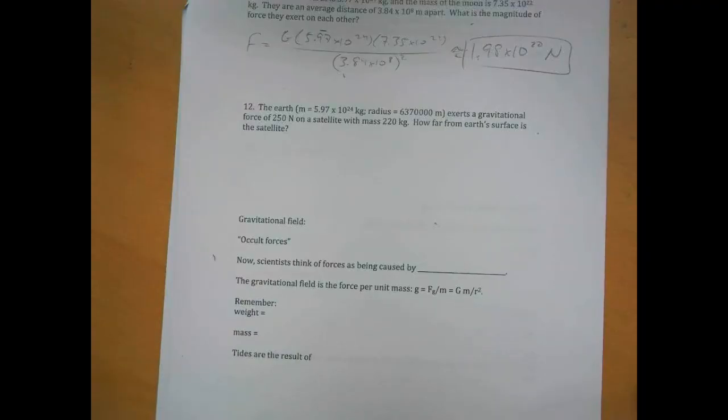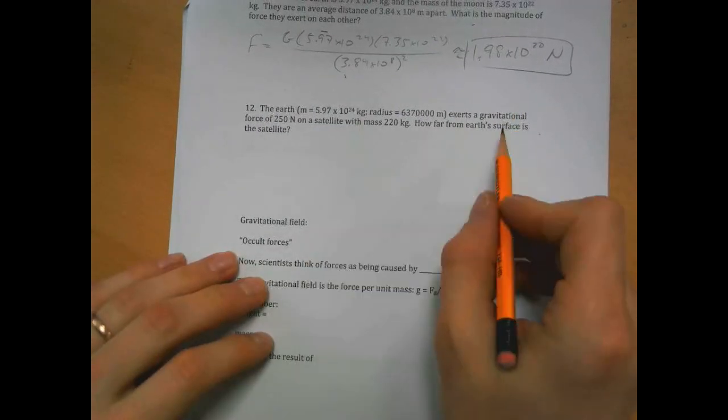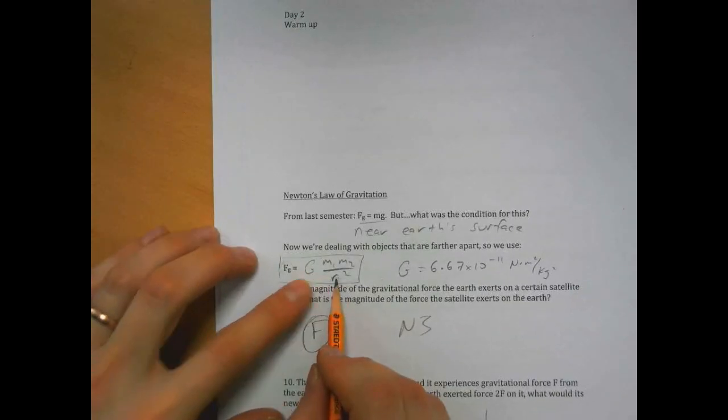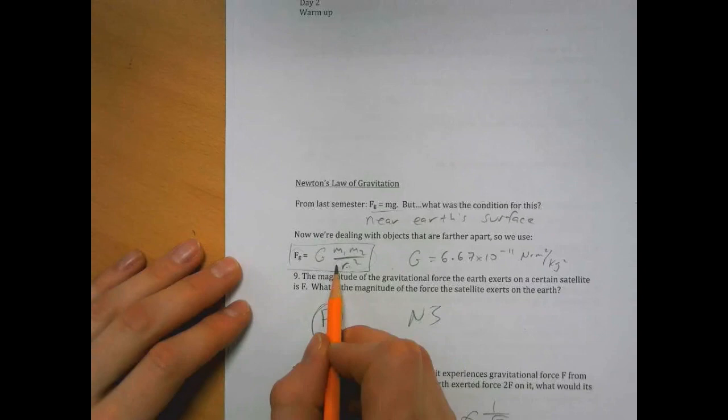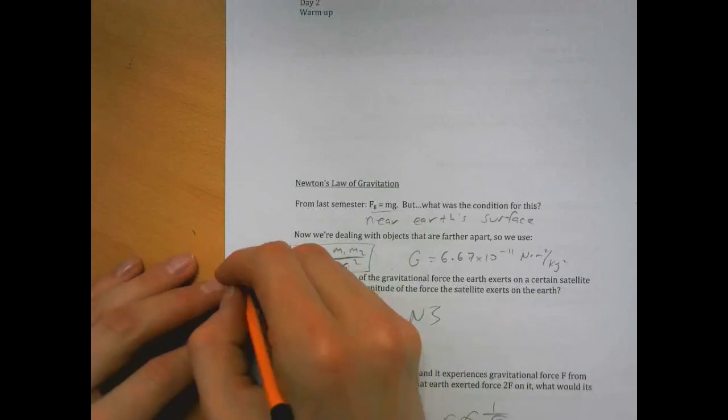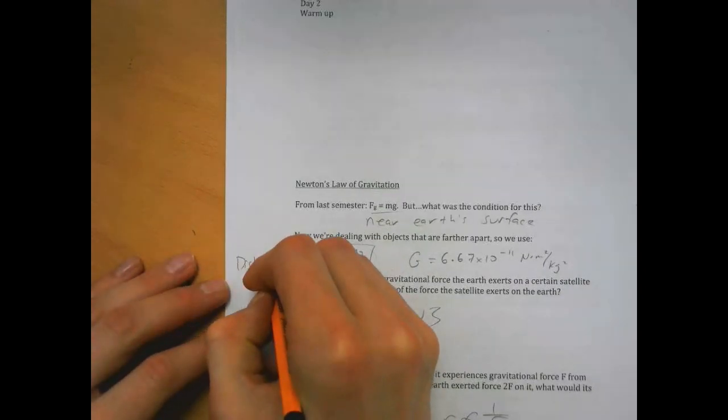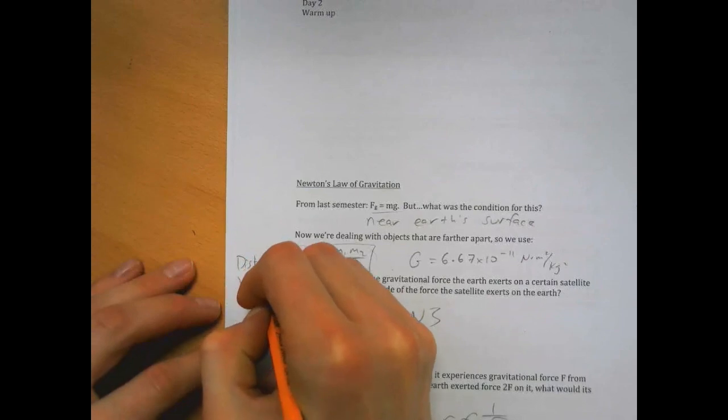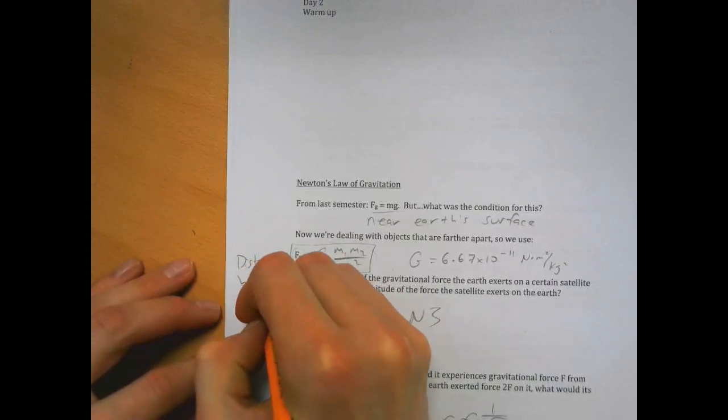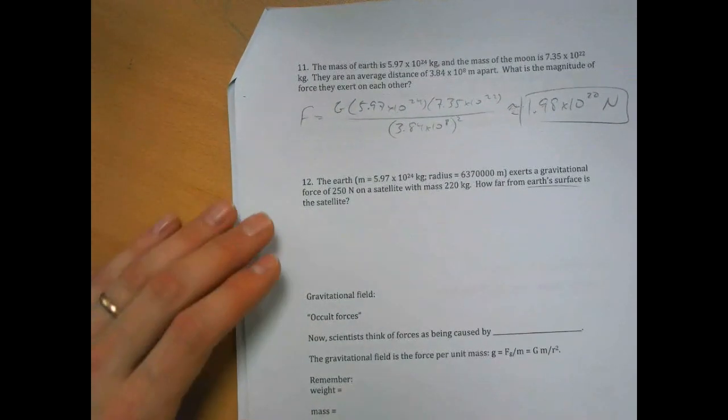Earth exerts a gravitational force of 250 newtons on a satellite with mass of 220 grams. How far from Earth's surface is the satellite? I didn't mention this, this r is the distance between the centers of the objects.